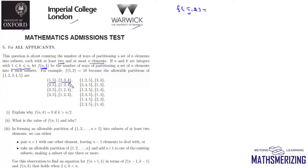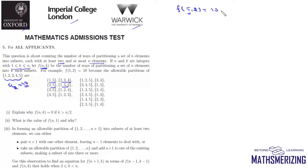For instance, the partitions include {1,5} and {2,3,4}, or {2,5} and {1,3,4}, and so on. Another way of looking at it is: from these five elements we have to select two elements, which can be done in 5C2 ways, which is 10. When we select two elements, the remaining three elements go to the other set. So the total number of ways of partitioning 5 elements into two subsets is simply 10.